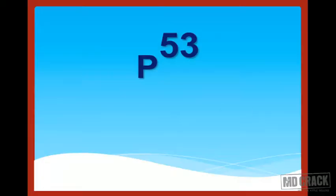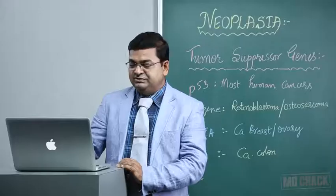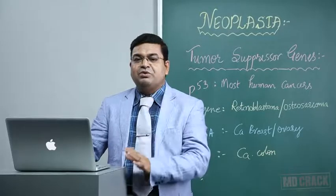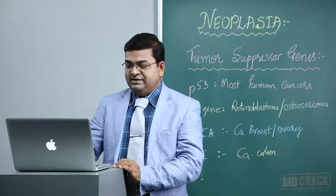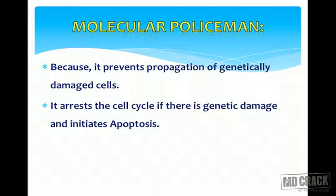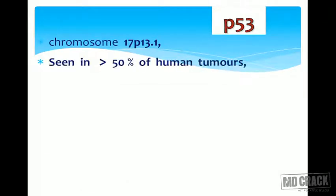Now let us look at the p53 gene, also known as the guardian of the genome or molecular policeman. It is one of the most important genes that controls the normal cell cycle and is mutated in most human malignancies. It is called the molecular policeman because it prevents the propagation of genetically damaged cells — it arrests the cell cycle if there is genetic damage and makes the cell undergo apoptosis, acting like an emergency brake whenever there is DNA damage. The p53 gene is located on chromosome number 17.